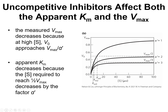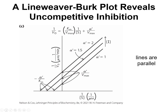Uncompetitive inhibitors affect both the apparent KM and the Vmax. Your Vmax is going to decrease and your apparent KM is going to decrease as well. On the double reciprocal plot, all of your Y-intercepts for the different concentrations of inhibitor are different, meaning your Vmax is different. And we see the same thing with our X-intercepts — they're all different for the different concentrations of inhibitor.